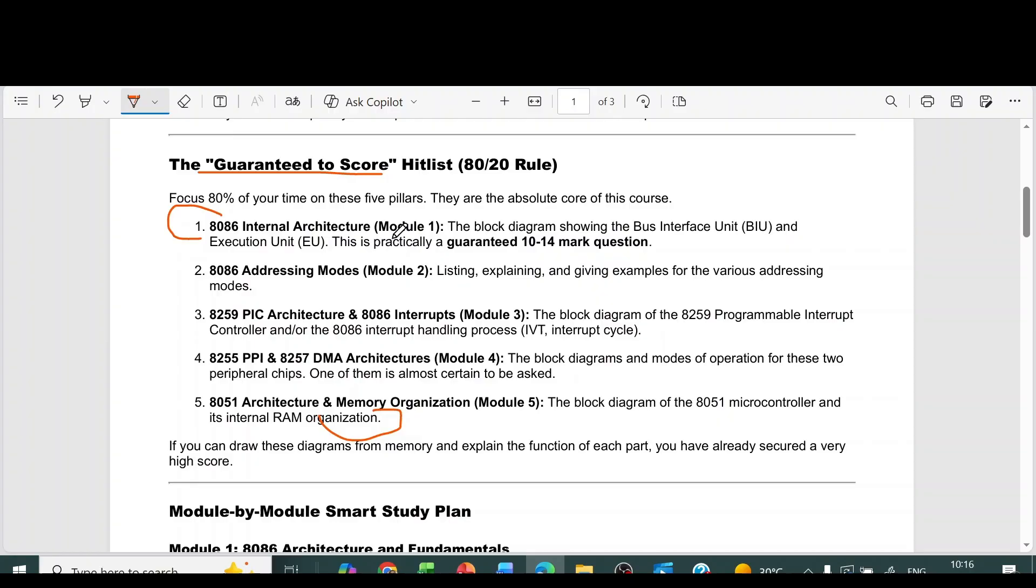First module is 8086 internal architecture, the block diagram showing the bus interface and execution unit. This is a very important question from the first module. From the second module, the most important question is the 8086 addressing modes, listing, explaining, and giving examples for the various addressing modes.